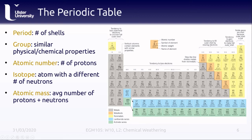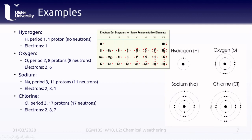Atoms can have different numbers of neutrons in their nuclei, and those atoms with different numbers of neutrons are what we call isotopes of an element. Each element also has an atomic mass or atomic weight, which is the average number of protons and neutrons across all of the different isotopes of that atom. We'll be looking at a number of different element examples in this lecture.